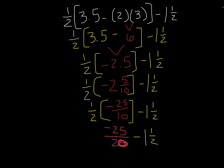I'm losing a little bit of room, but I need to be able to combine both my negative 25/20 and subtract my 1 and 1/2. So I am going to relocate this up top here and rewrite this out. So negative 25/20 minus 1 and 1/2.